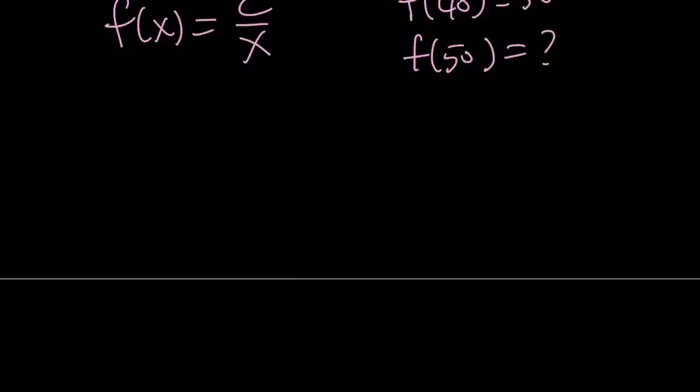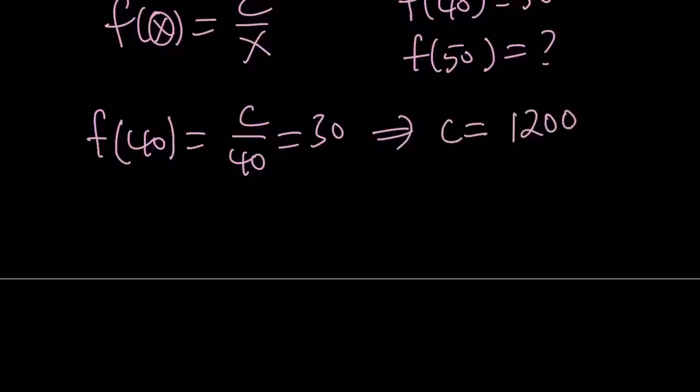All right, great. So now, since I have an expression for f of x, I'm going to replace x with 40 first. So let's go ahead and do it. Replace x with 40, you get c over 40. We know that it's equal to 30. From here, cross multiplication gives us c equals 1,200.